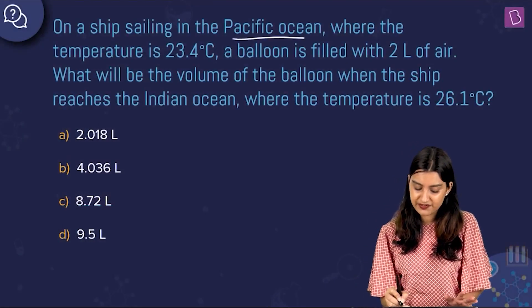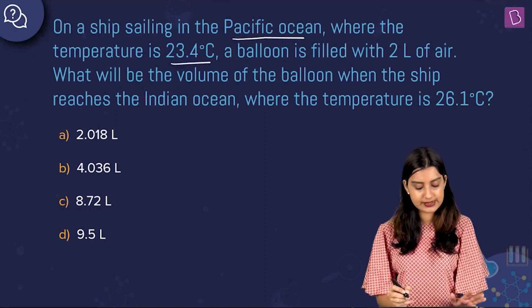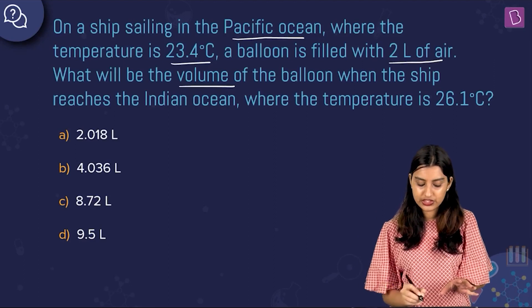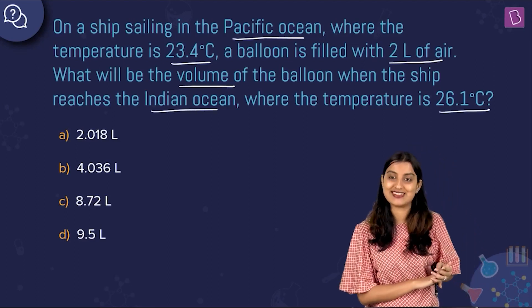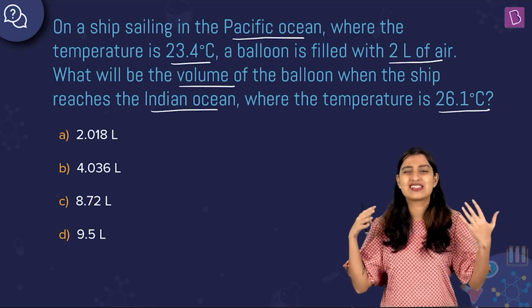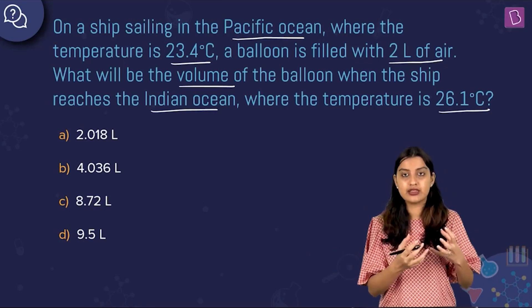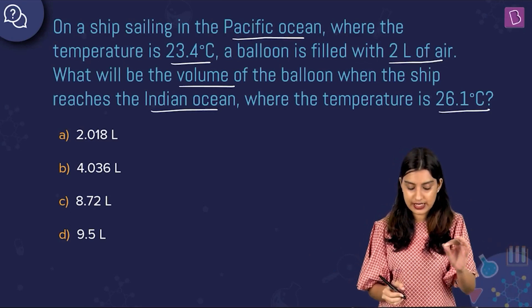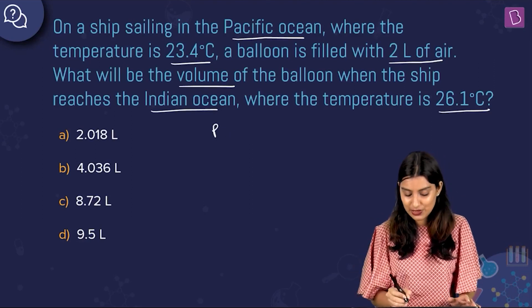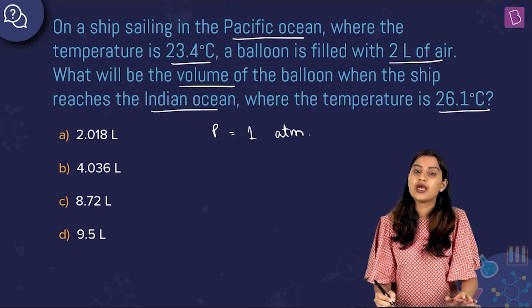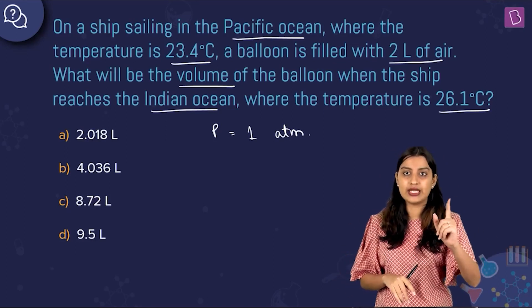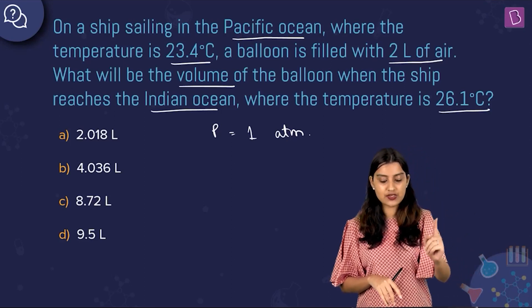On a ship sailing in the Pacific Ocean where the temperature is 23.4 degrees Celsius, a balloon is filled with two liters of air. What will be the volume of the balloon when the ship reaches the Indian Ocean where the temperature is 26.1 degrees Celsius? We are talking about sea level, and at sea level your atmospheric pressure is going to be 1 atm — so pressure is constant no matter where you are, whether on the Pacific or Indian Ocean.